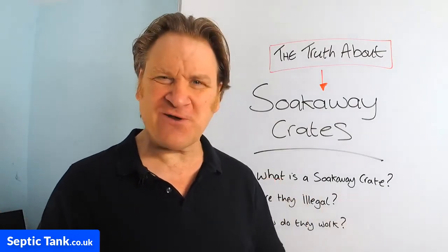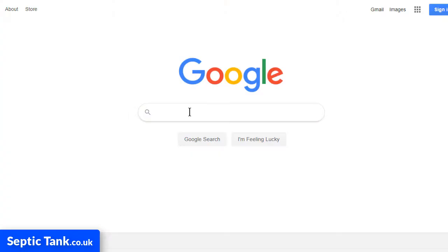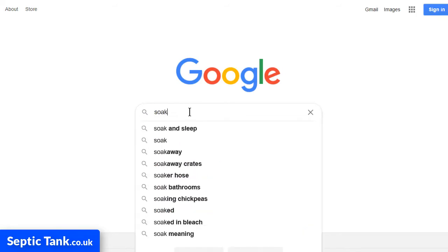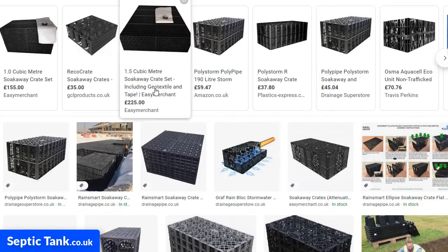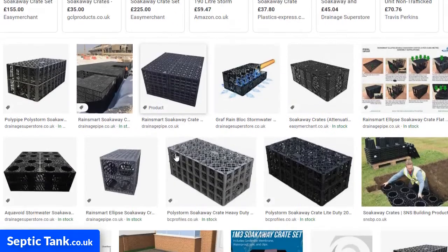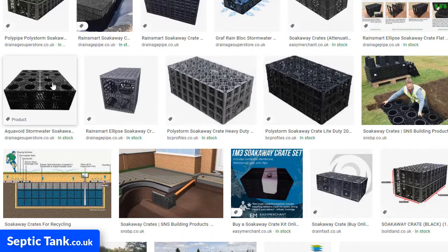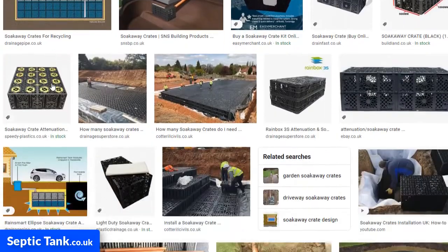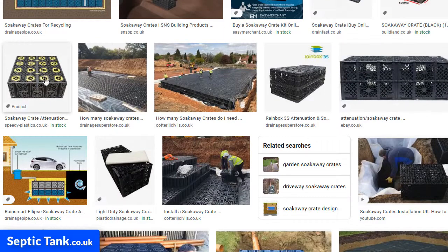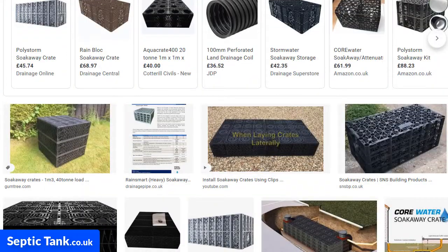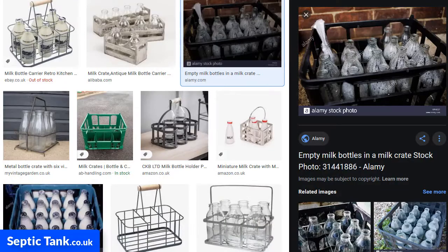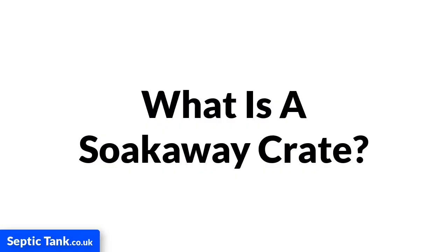So, what are soakaway crates? Well, if you type the word soakaway crates into Google, it's no wonder people are confused because you get loads of different images. You've got square ones, you've got oblong ones, you've got double ones, you've got ones with yellow circles in, you've got blue ones, you've got loads of different shapes and sizes. And it's no wonder that people often confuse them with milk crates. Remember the old milk crates from the 50s and 60s?